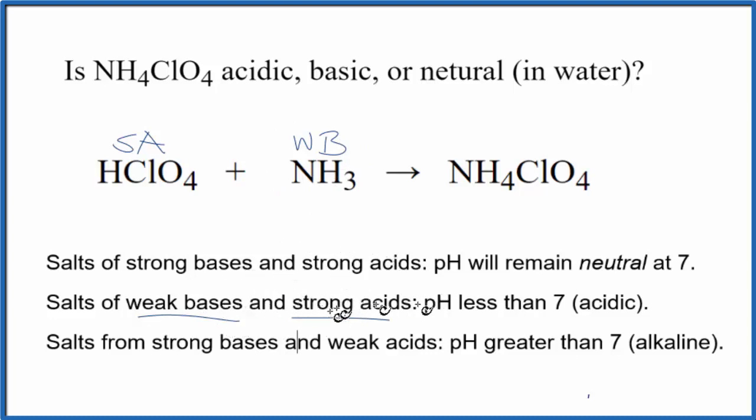So when we have a strong acid and a weak base, we end up with a salt that has a pH that's less than 7, so that's going to be acidic.